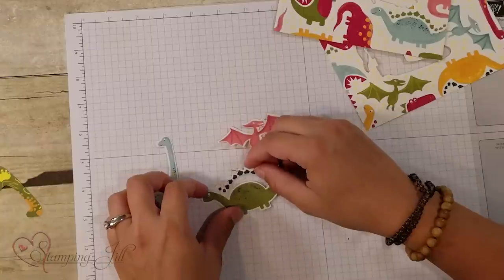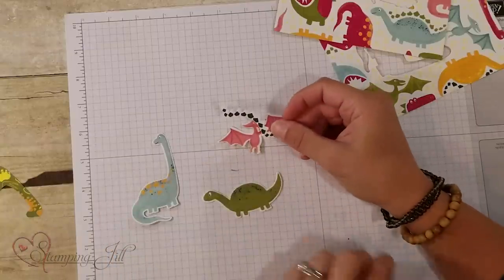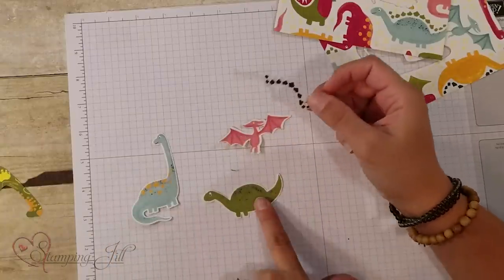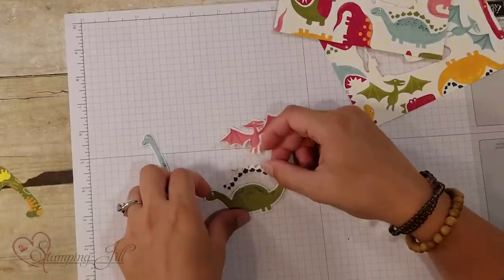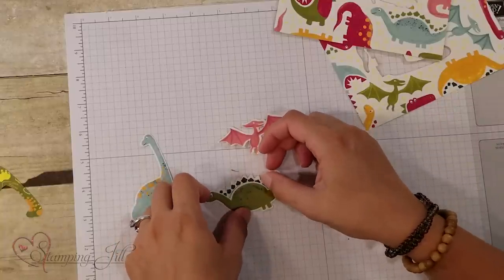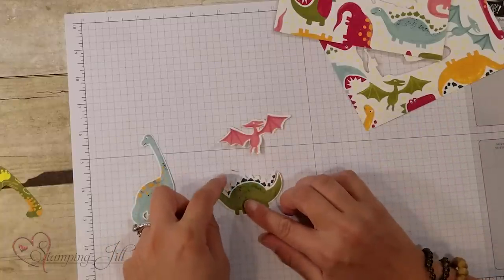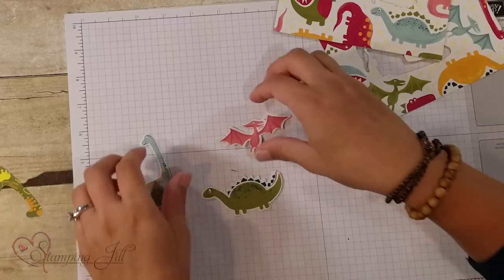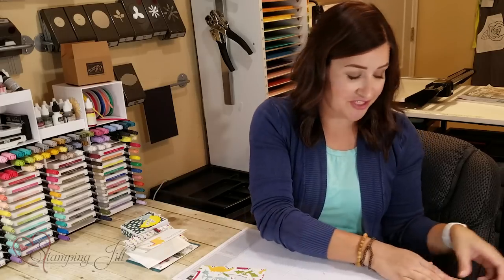I didn't count how many, but they're different colors too. And then their little spikes on this guy and on the T-Rex cut off separately. So you can do a little bit of dimension to them, which is kind of fun. So I thought that was a really fun feature.